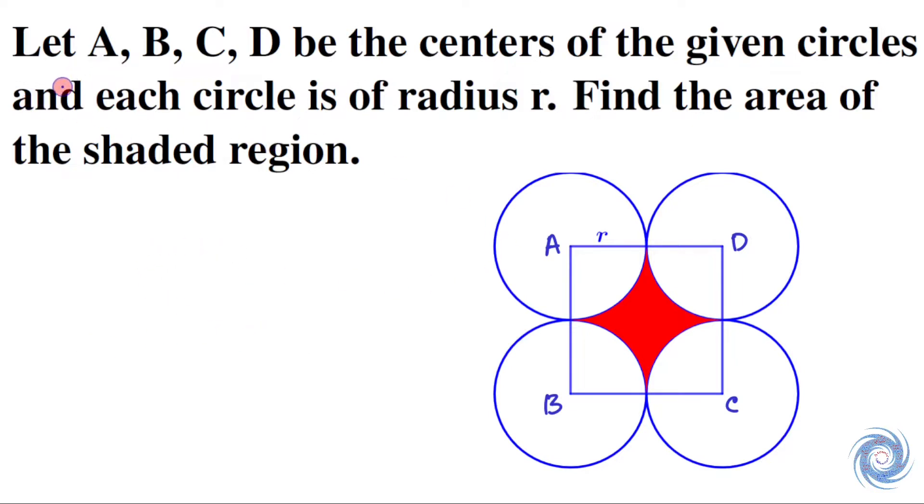Here the question is: let A, B, C, D be the centers of the given circles and each circle is of radius r. Then find the area of the shaded region. That means we have to find the area of this red colored region.